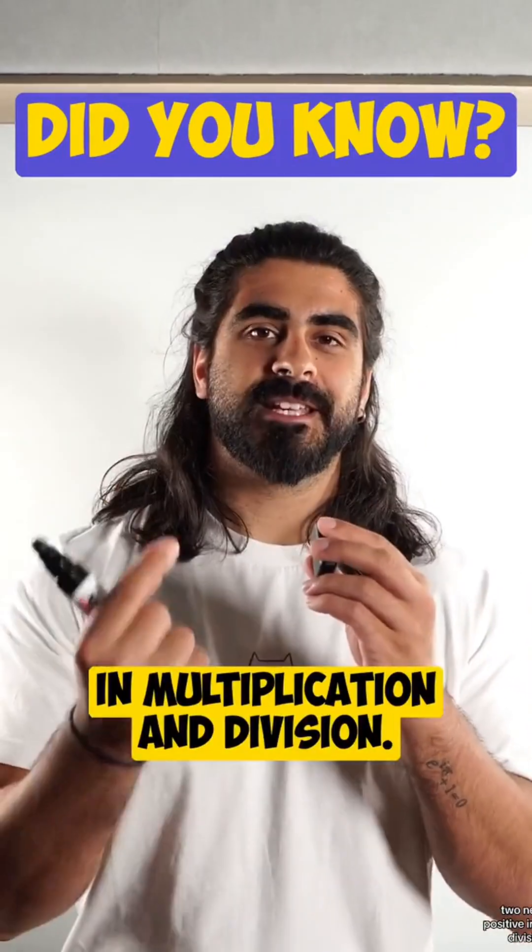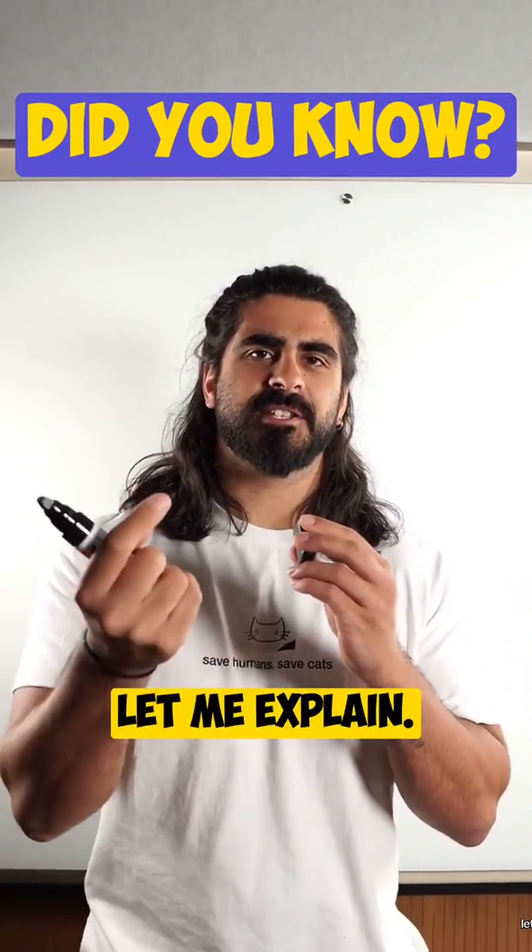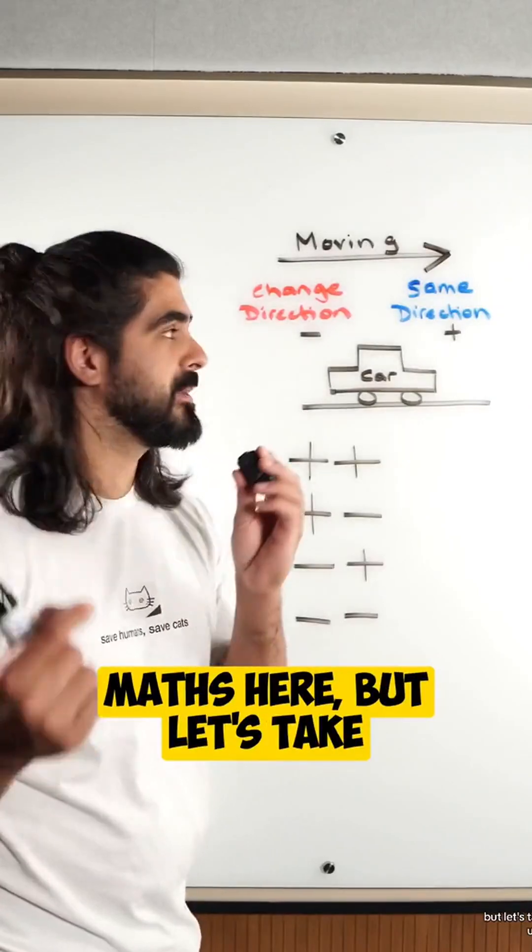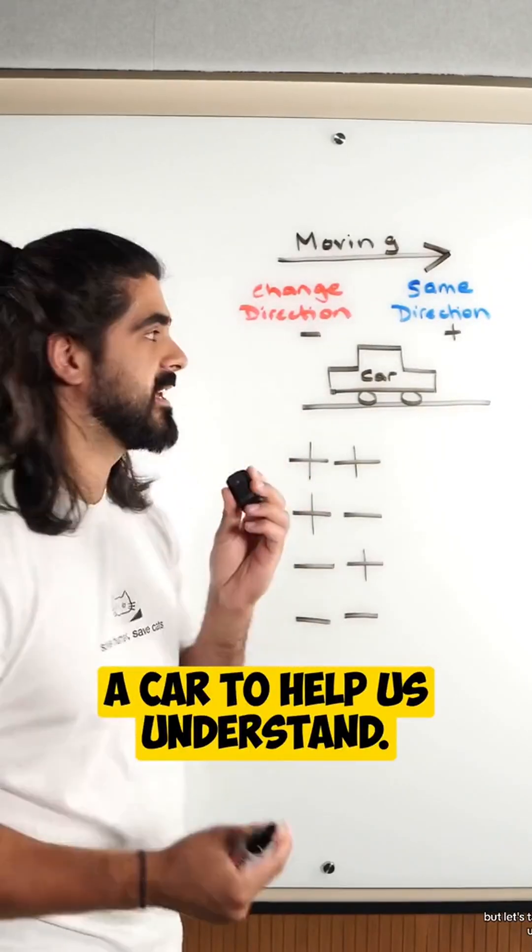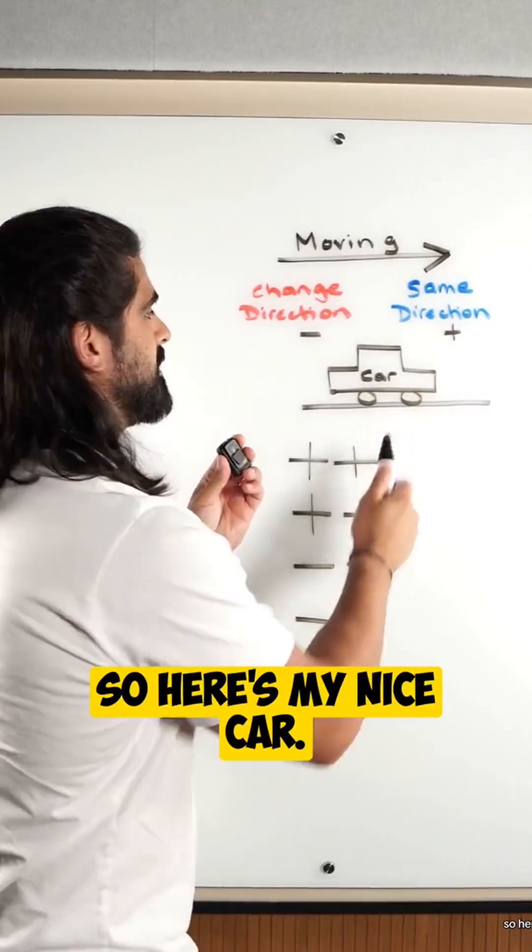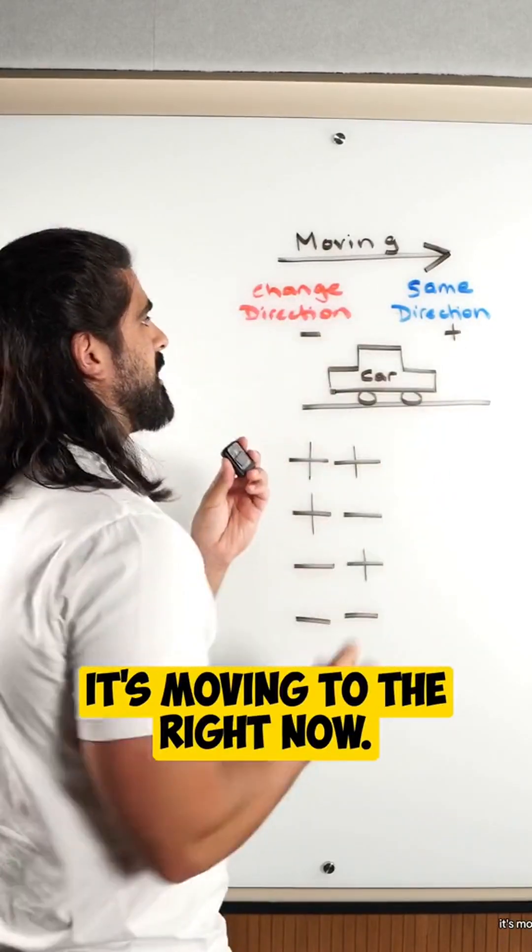Two negatives make a positive in multiplication and division. Why is that? Let me explain. I'm not going to do much maths here, but let's take a car to help us understand. So here's my nice car, let's say a Chevrolet. It's moving to the right.